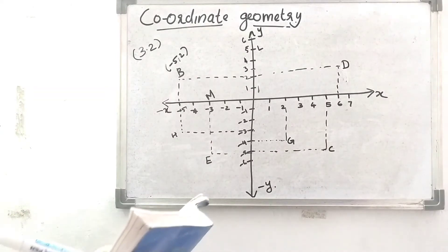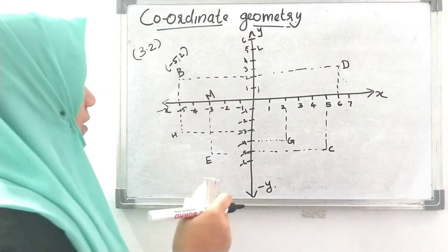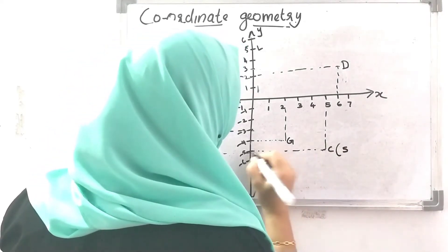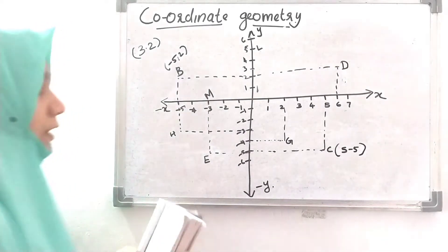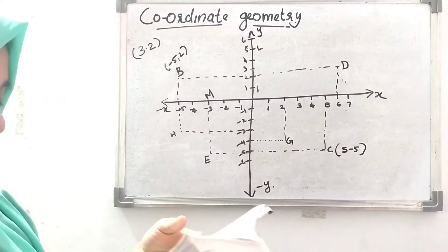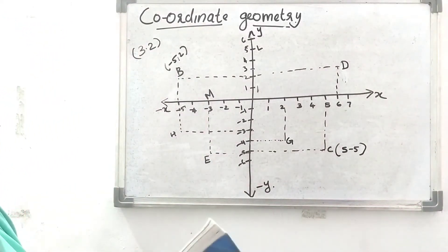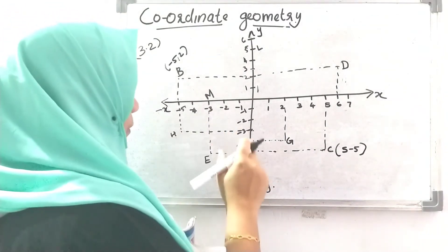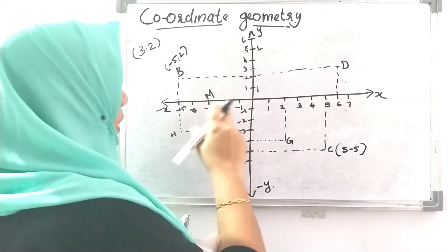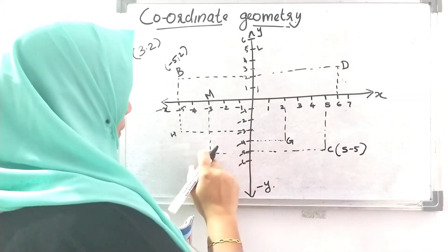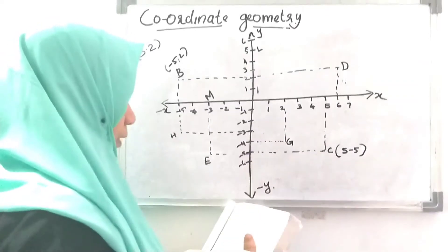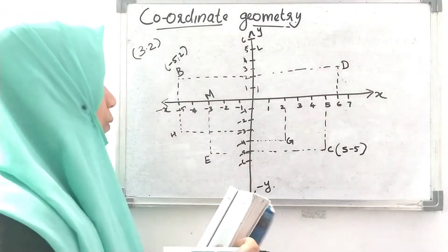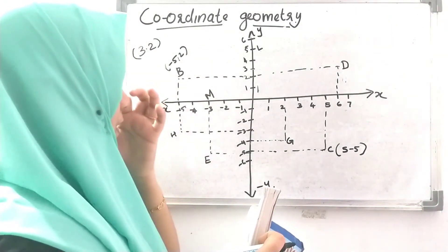The coordinate of point B. Then the coordinate of C: x-axis is 5 and y-axis is minus 5. The point identified by coordinates minus 3 and minus 5: x is minus 3 and y is minus 5. The point identified by coordinates 2 and minus 4: x-axis is 2 and y-axis is minus 4, so the coordinate is (2, minus 4).